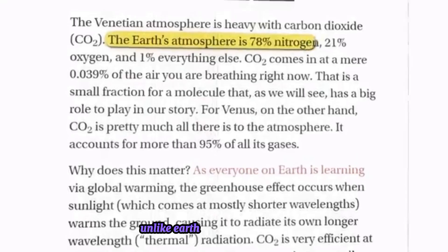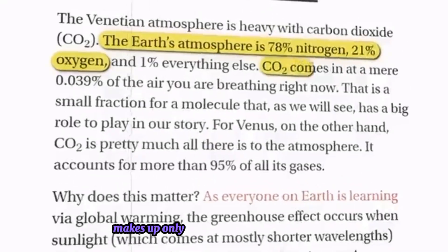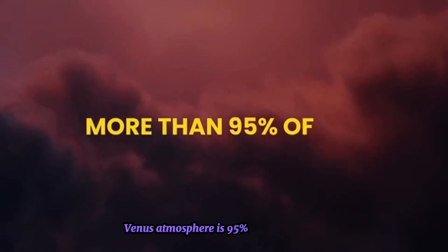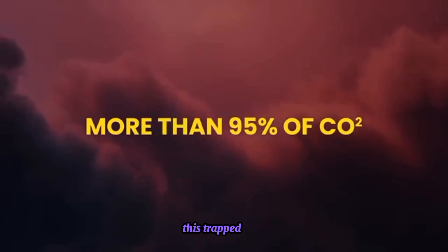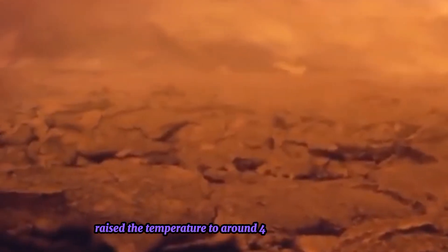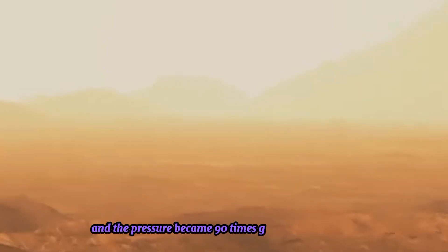Unlike Earth, where carbon dioxide makes up only a small part of the atmosphere, Venus' atmosphere is 95% carbon dioxide. This trapped heat raised the temperature to around 475 degrees Celsius, and the pressure became 90 times greater than Earth's.